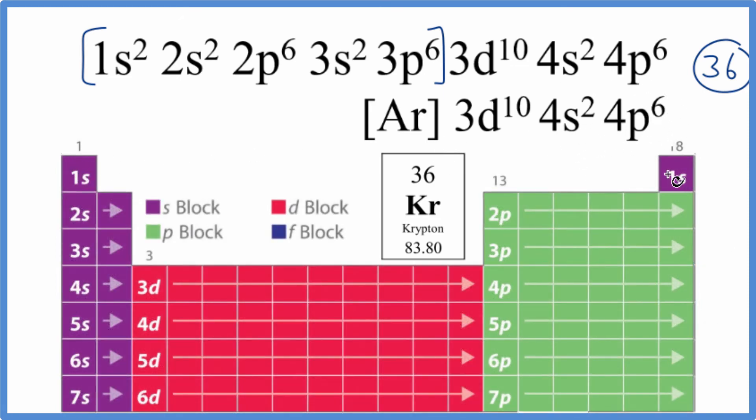We have 1s¹, 1s². The s orbitals are full: 2s¹, 2s². P has up to 6, so 2p¹, 2, 3, 4, 5, 6. Then we have 3s² 3p⁶, go to 4s². From 4s² we go to 3d¹⁰.